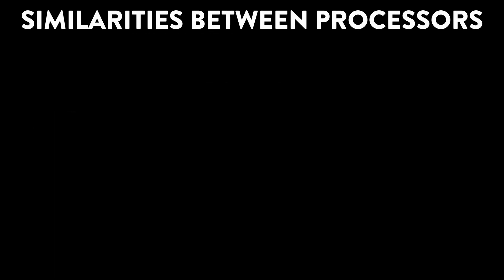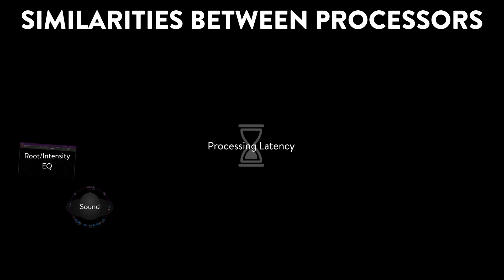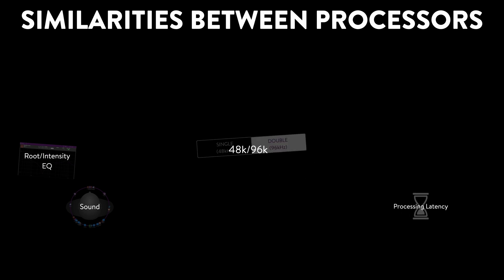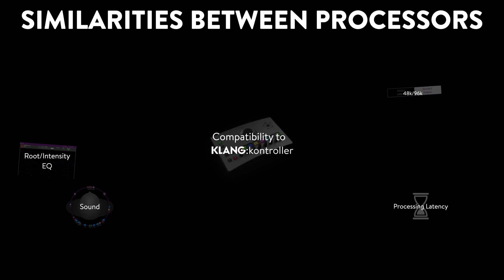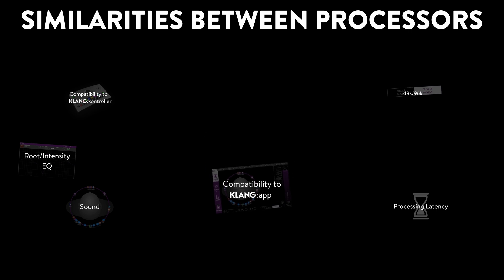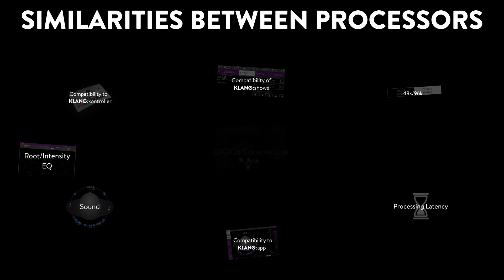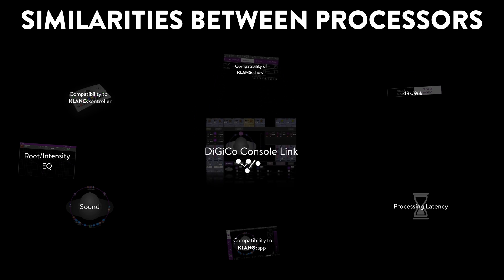Let's begin with the similarities between Clang Conductor, DMI Clang and Clang Vocal. Most importantly, they all sound identical and feature the same fully immersive panning and root intensity EQ. The internal processing latency is at around 0.25 milliseconds plus IO of your choice. Switching between 48 and 96k will not reduce your channel or mix count. You can use Clang Controller with all Clang processors, Clang App is compatible with all devices, Clang Shows can be exchanged without any need to convert, and the full workflow integration on DiGiCo SD and Quantum Range consoles works across all processors.